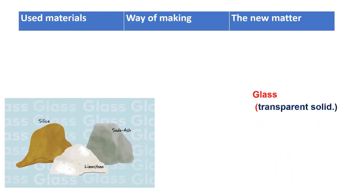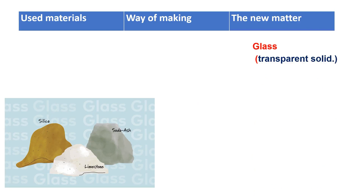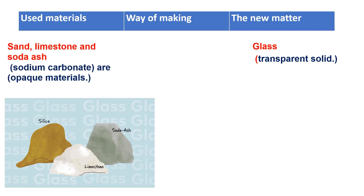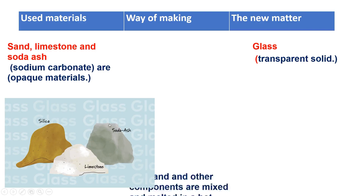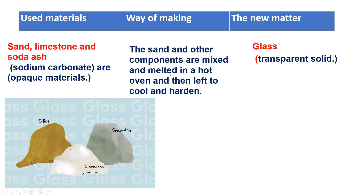The next material: glass. Glass is a transparent material - you can see through it. Glass is made from sand, limestone, and soda ash - as shown in the diagram. Silica is one of the salts in sand, limestone is the calcium stone, and soda ash. These materials individually are not transparent. When mixed together and melted at high temperature in a furnace, then cooled and solidified, they become glass.